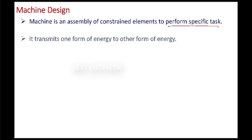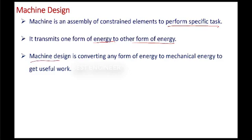Here, machine design. First of all, let's know what is machine. Machine is an assembly of constrained elements to perform specific task. Whatever may be the task, number of links and the elements constrained together to do the work, that is called machine. It transmits one form of energy to other form of energy. Which one is converting one form of energy to other form of energy? That is called machine. Here, machine design is converting any form of energy to mechanical energy. That is called machine design.